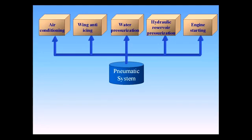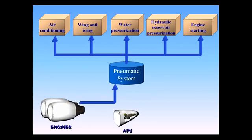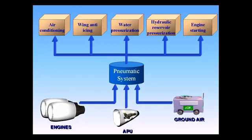High-pressure air can be supplied from three sources: the engine bleed system, the APU, and external high-pressure ground power unit.